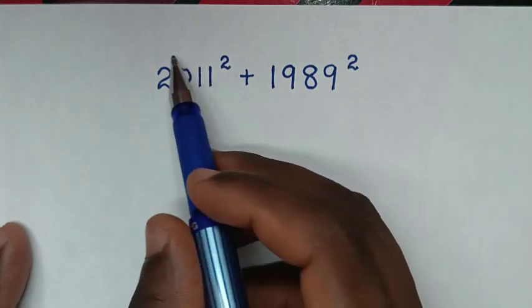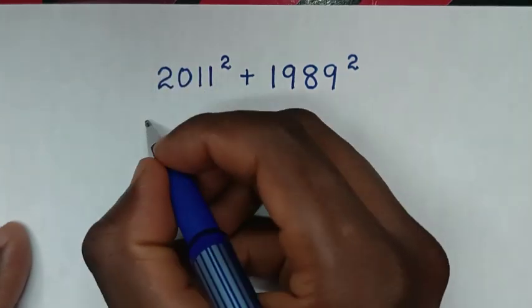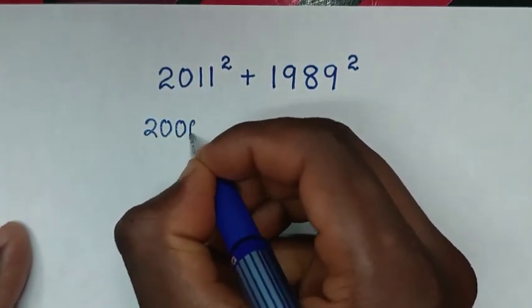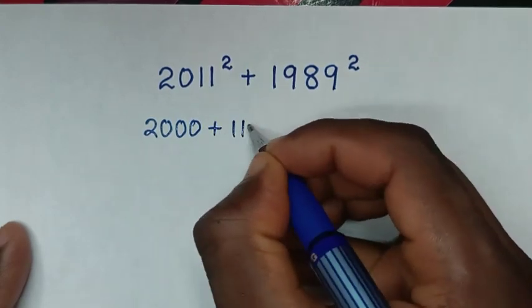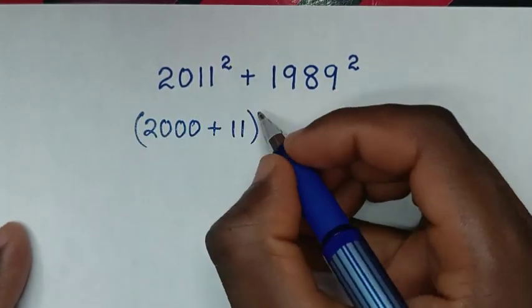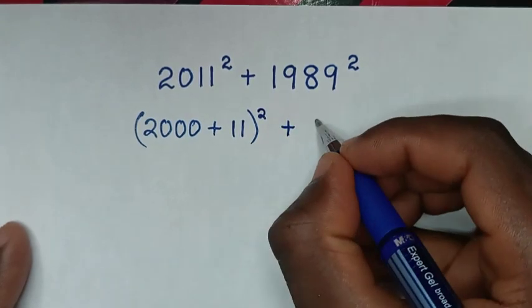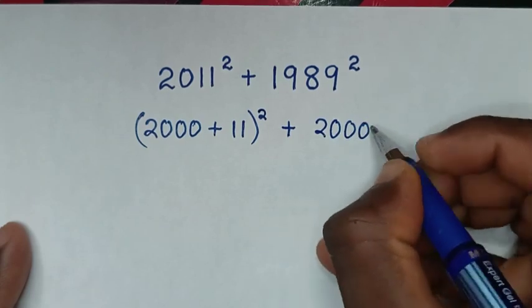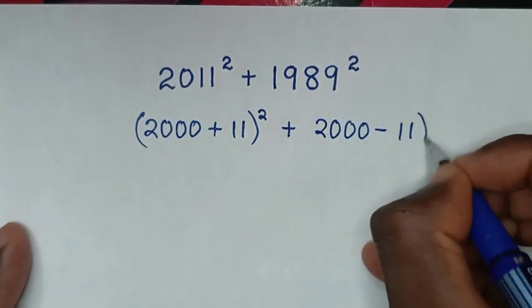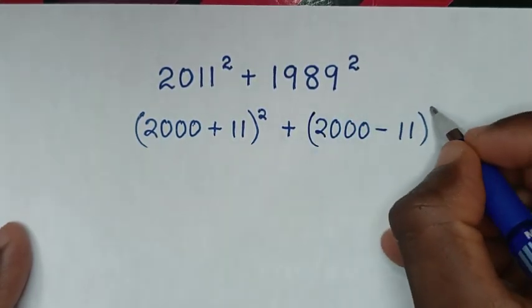2011 is the same as 2000 plus 11, bracket squared, then plus 1989, which is the same as 2000 minus 11, bracket squared.